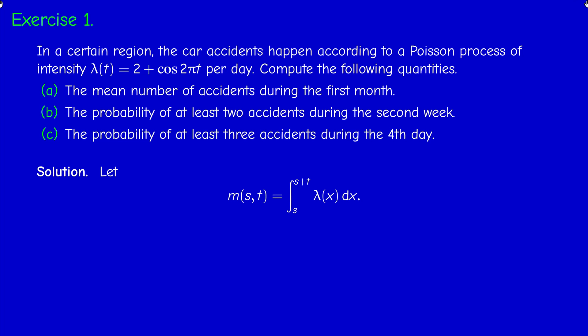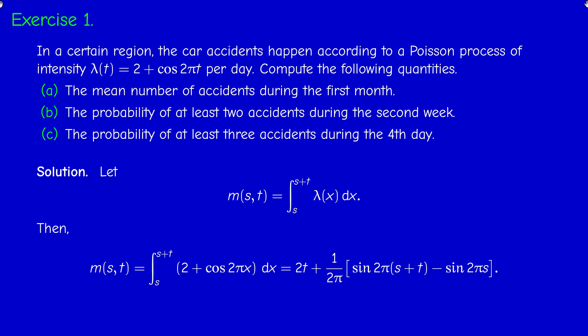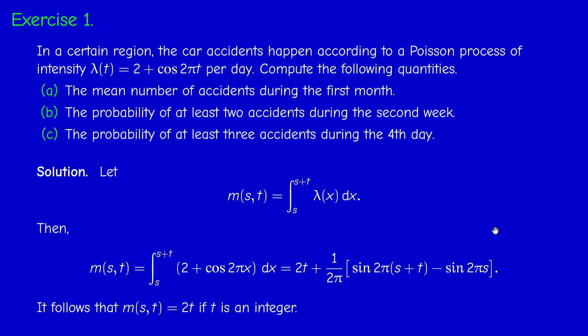Since it's a non-homogeneous Poisson process, we compute the integral from s to s+t of the intensity lambda. This integral is easy to compute because the expression is a periodic function. When we integrate and replace lambda by its value, we get 2t plus a term involving sine that depends on s and t. Since sine is 2π-periodic, when t is an integer those terms cancel, so M(s,t) is simply 2t.